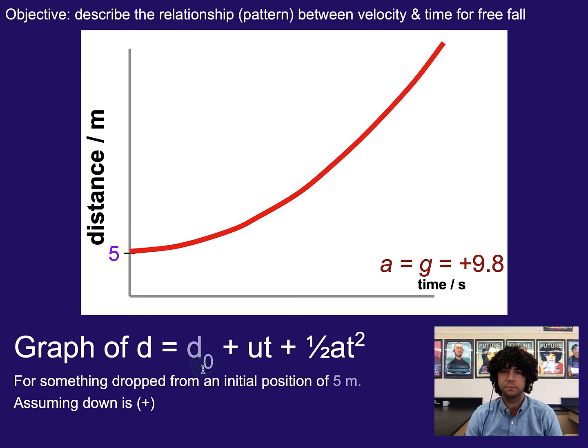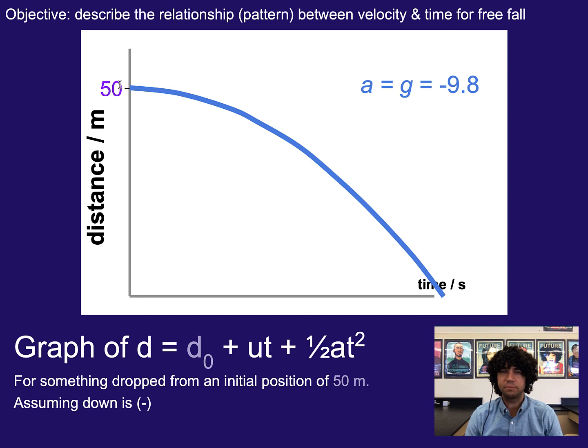If instead we had something falling, we might say it's starting up at a distance or height of 50 meters, but gravity is downwards or negative. And so it's going closer and closer down to ground floor or zero distance above the ground. So here again, distance is really behaving a little bit more like position instead of distance in this case.